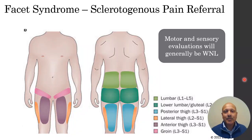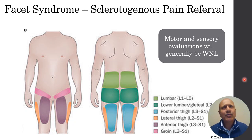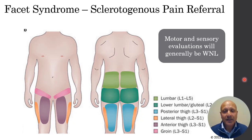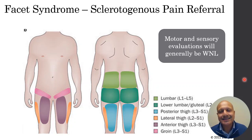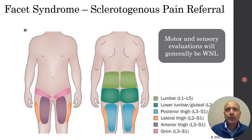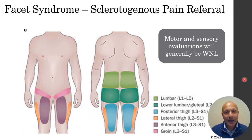As we look into pain referral, as opposed to radiation — remember radiation refers more to neurogenic pain, while referral is more about sclerotogenous or myotogenous pain. This diagram shows that motor and sensory evaluations will generally be within normal limits, because this is not a neurogenic issue. This is not a disc herniation with neuropathy or nerve entrapment. This is just localized joint pain.